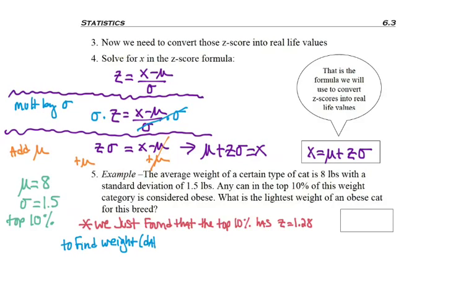So now to find the weight I want, which is a data point, I need to use the formula x equals μ plus z·σ. So I plug in the values I have: 8 for the mean, 1.28 for z, the z-score for top 10%, and then σ is actually 1.5.